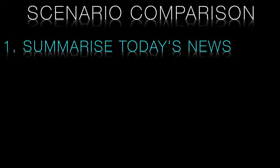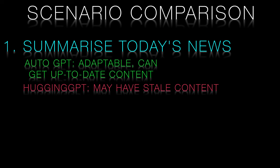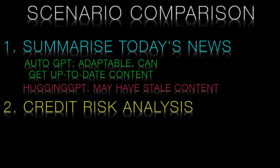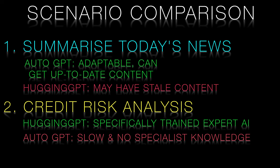Let's look at two tasks where one model excels over the other. For a task like summarising recent news articles, Auto-GPT would be a better fit due to its adaptability and its ability to learn from a few new examples, which helps it understand the context and generate accurate summaries. In contrast, Hugging-GPT would be a better choice for a task like credit risk analysis, as its expert models can be specifically trained and tuned for this purpose and can provide fast and accurate assessments.